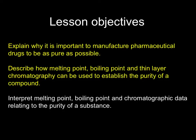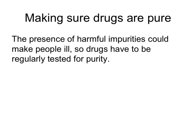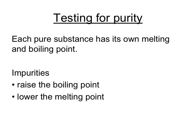Finally, you need to understand why it's important to make pharmaceutical drugs as pure as possible and how to show that they are pure. Pharmaceutical drugs must be as pure as possible because impurities are likely to be bad for you — the presence of harmful impurities could make people ill. Drugs are regularly tested for purity. You can test whether something is pure by finding its melting or boiling point, since every pure substance has its own melting and boiling point. The presence of impurities tends to raise the boiling point or lower the melting point, so if the measured value differs from the published value, the material is not pure.